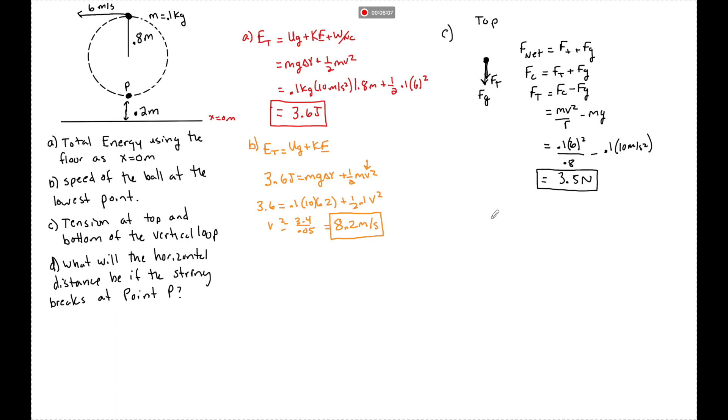at the bottom of the circle, we have Fg still, but now the force of tension points opposite to that. And once again, guys, there is no force of the normal. There is no surface here. Okay, so please, there is no normal.